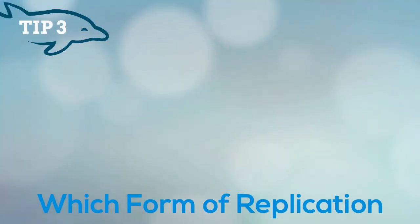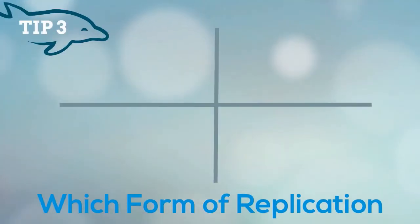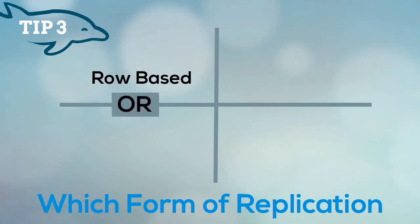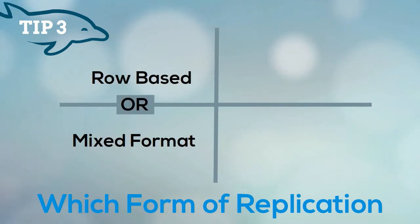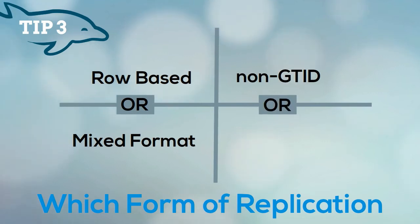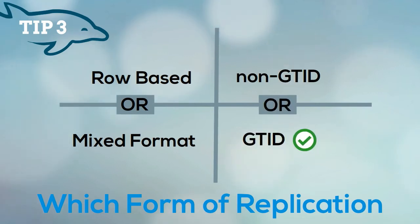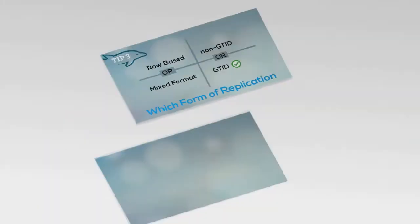Next, you will need to determine which form of replication you will be deploying. You can either use row-based replication or a mixed format. You also have the choice of the traditional non-GTID or with-GTID, which we recommend for versions 5.6 and 5.7 if you can use it.